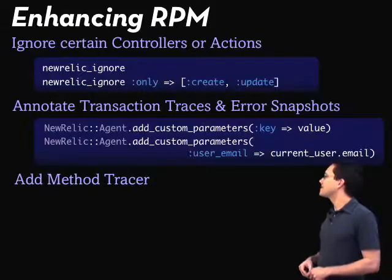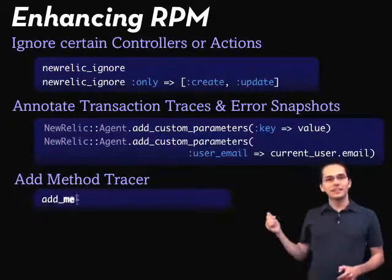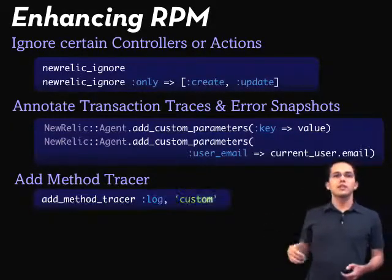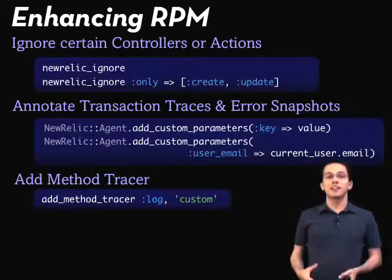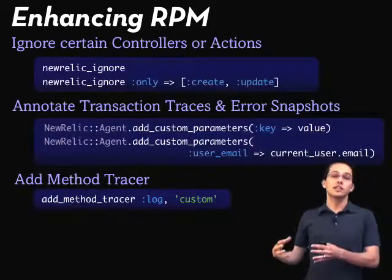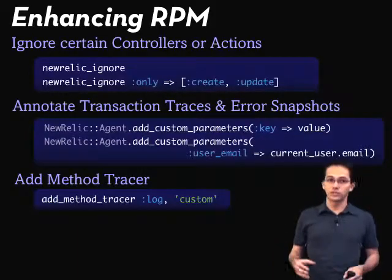Lastly, there's the add method tracer function. If you add this piece of code, you can tell it to collect metrics on a specific function in your application that maybe it wouldn't otherwise.